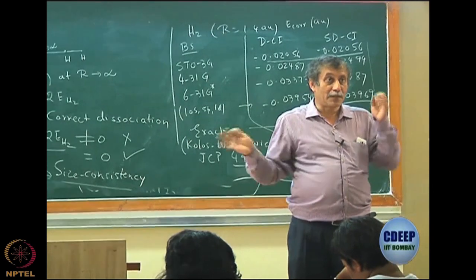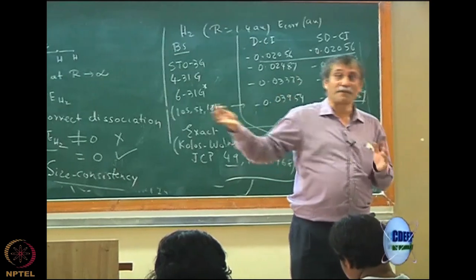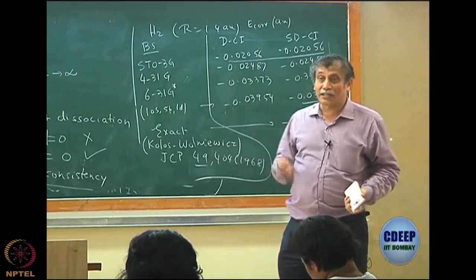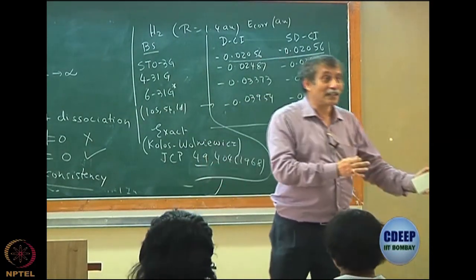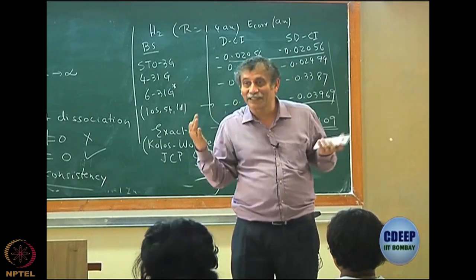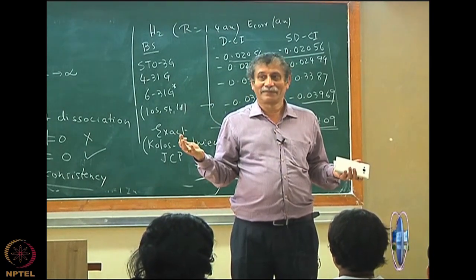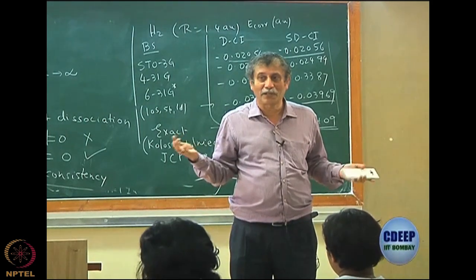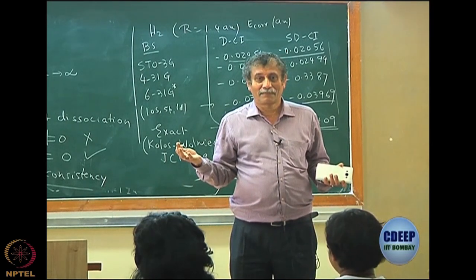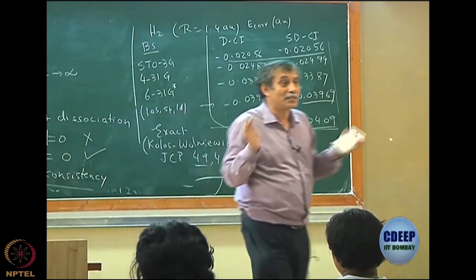Perturbation theory is good in terms of size consistency. It is not variational, but it is good. Similarly, coupled cluster is not variational, but it is good. When I do CI — variational — it has a size consistency problem. As soon as you are variational, you have a problem with size consistency. I have thought philosophically: variation gives an upper bound, but is it really good?